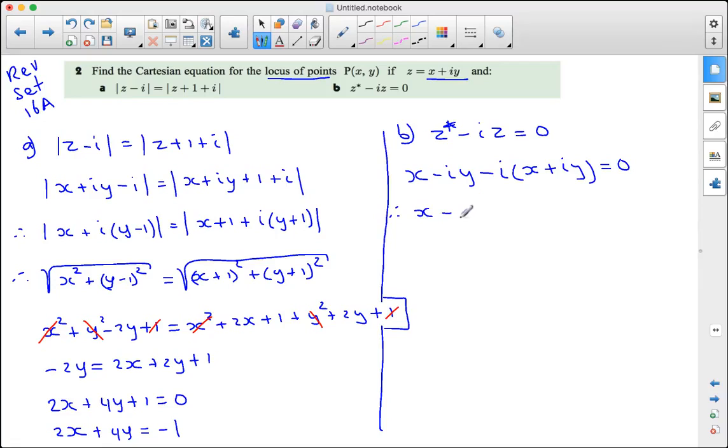So x - iy - ix. Negative i times i is negative i squared, which makes positive 1, times y. So if I collate the real and imaginary parts, the real part is x + y, and then I have -i(x + y) equals 0.